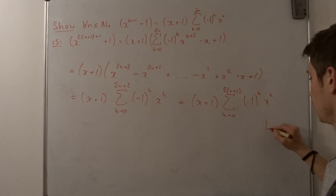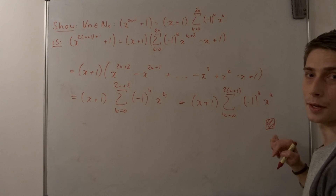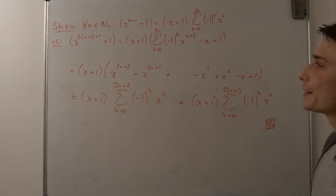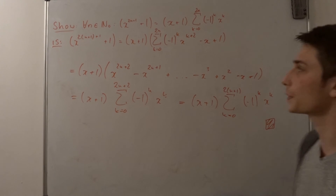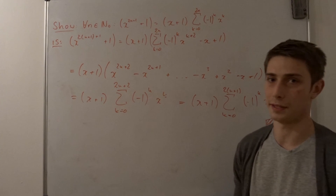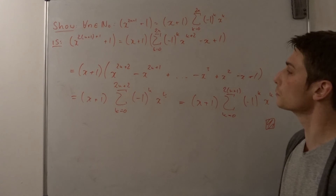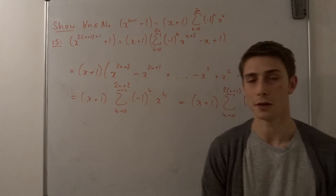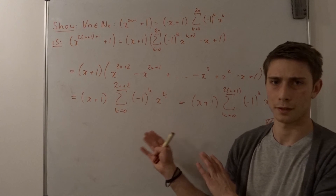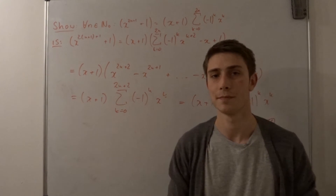So this is x plus 1 times the sum from k equals 0 to 2n plus 2 of minus 1 to the k-th power times x to the k-th power. And since 2n plus 2 equals 2 times n plus 1, this is x plus 1 times the sum from k equals 0 to 2 times n plus 1 of minus 1 to the k-th power times x to the k-th power. This is indeed what we wanted to show, so we can place the QED square. We have proven this identity using mathematical induction, and it's such a nice result. I hope you enjoyed this video — if you have any questions about this procedure just leave some comments.